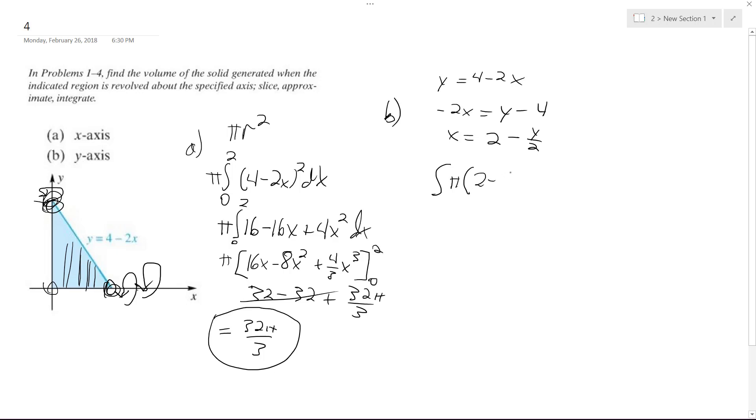Integrate two minus y over two squared, dy, and we're going from zero to four, and ultimately what we end up with is pi times, I'll just use the chain rule, you have two-thirds, two minus y over two cubed, from zero to four.